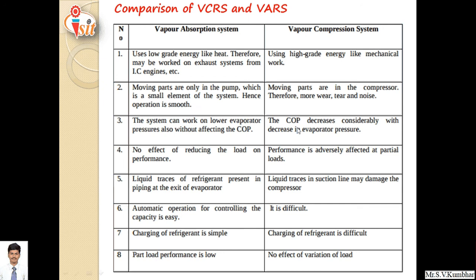Third difference is COP: in vapor compression, coefficient of performance decreases considerably with decrease in evaporator pressure; vapor absorption can work at lower evaporator pressure without affecting COP. Fourth: performance is adversely affected on partial load in vapor compression; vapor absorption shows no effect of reducing the load on performance. Fifth: liquid traces in suction line may damage the compressor in vapor compression — if liquid from the evaporator accumulates in the suction line it may choke and damage the compressor; in vapor absorption there is no compressor, so it does not cause any problem to the generator or absorber.